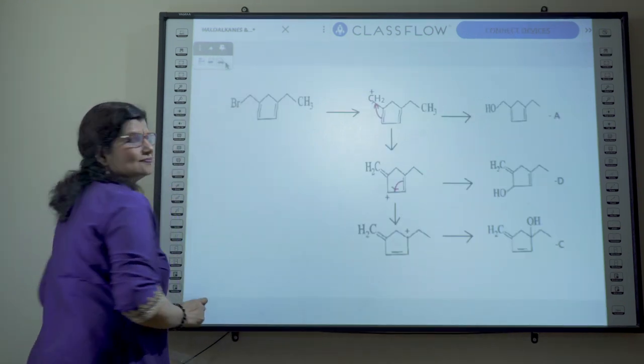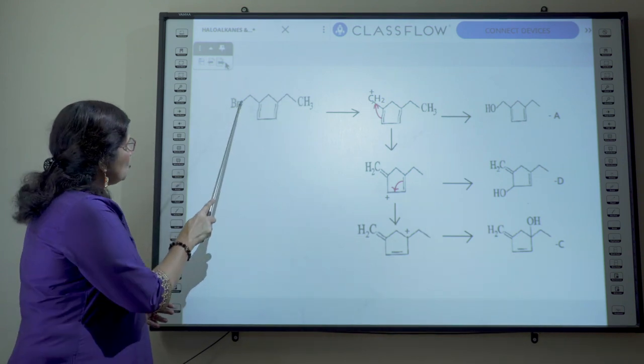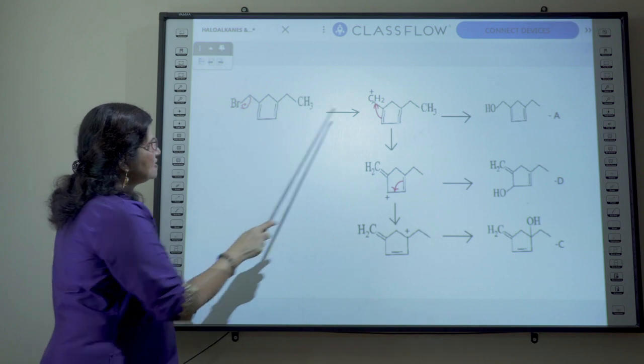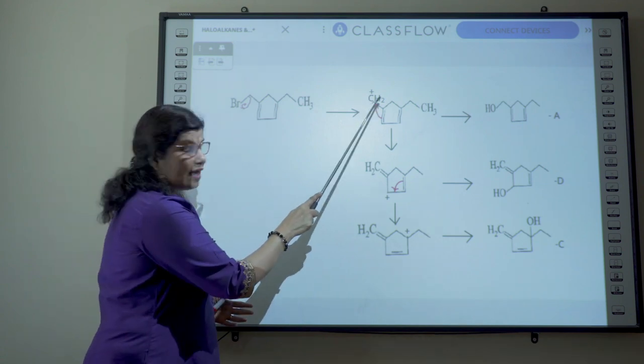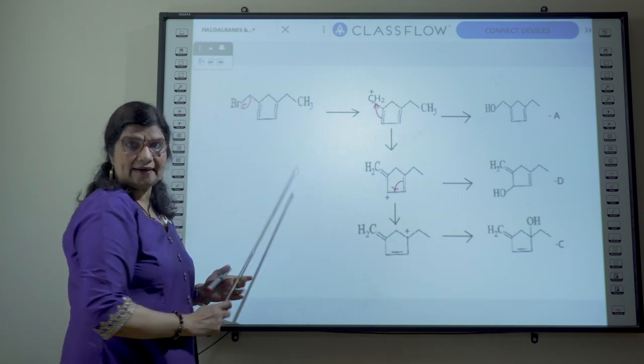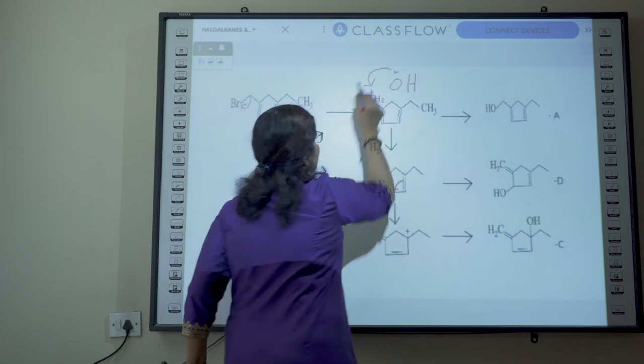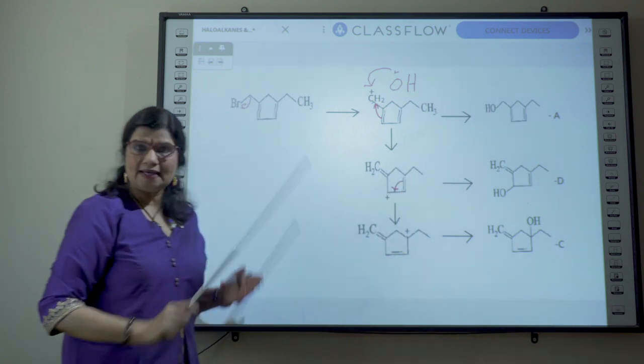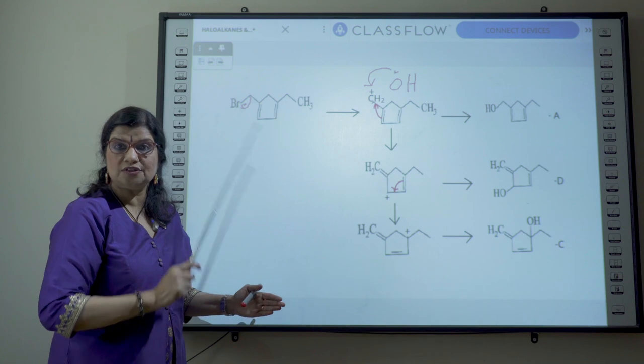Let's now analyze this question. So we have the alkyl bromide here. Now when this bromine is lost as Br minus in this manner you will get the corresponding allylic carbocation and this allylic carbocation is a primary allylic carbocation. To this allylic carbocation the nucleophile OH minus will be attracted to give you this particular product which corresponds to option A.